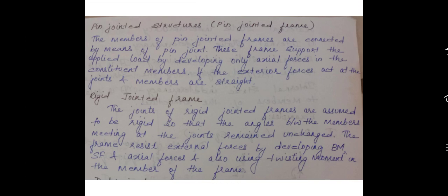Pin Jointed Structures, also known as Pin Jointed Frames, have members connected by means of a pin joint. These frames support the applied load by developing axial forces in the members. An example of pin jointed members is a truss.